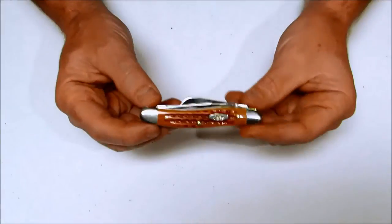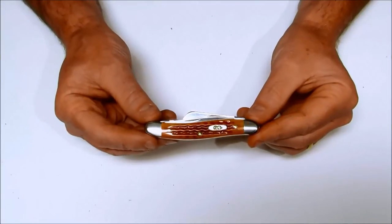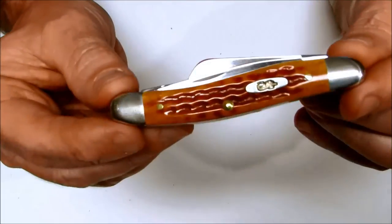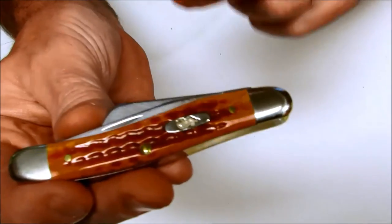Today on Oso Grande Knives TV we're looking at the Case Medium Stockman. This one has the pocket worn harvest orange jig bone scales.